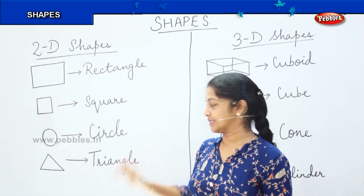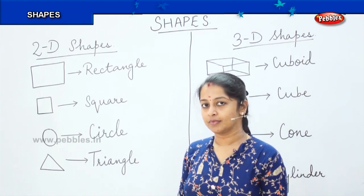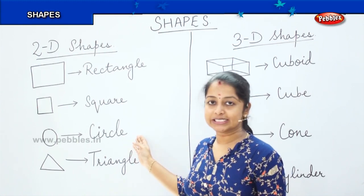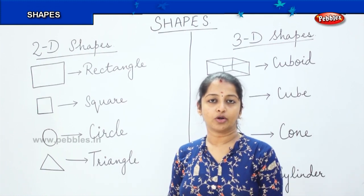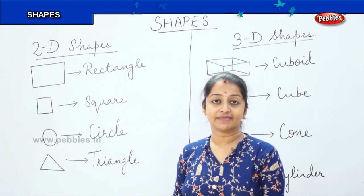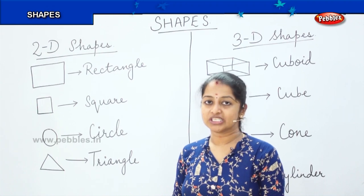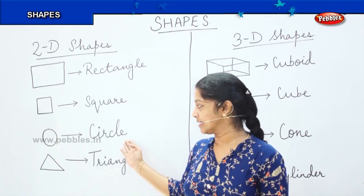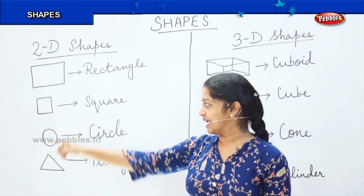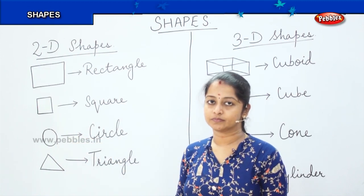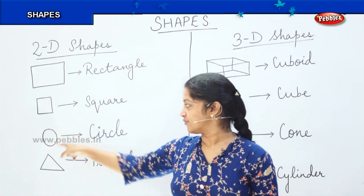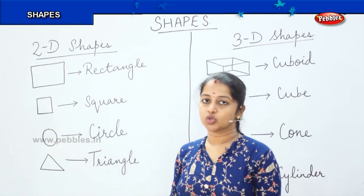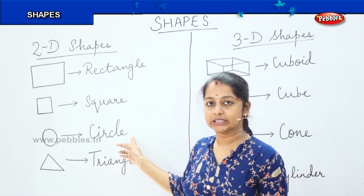In this shape we have all the 4 sides equal whereas here we have the opposite side equal, right? So this is called a square where you have got 4 sides and all the 4 sides are equal. What about this? Yes, this is a circle. Have you seen a coin? What is the shape of the coin? 1 rupee coin, 2 rupee coin, now we have 10 rupee coin as well. So what is the shape of the coin? It is a circle. Can you see any lines in the circle? Very good. There are no lines. It is just formed with a curved line. So there are no sides in a circle.